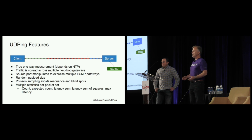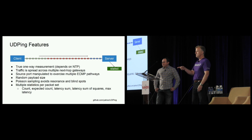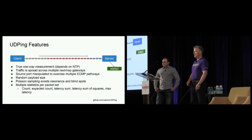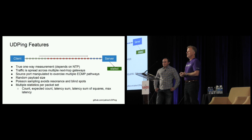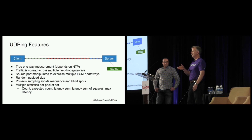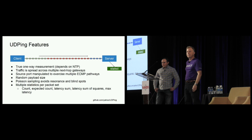We do true one-way measurement, so we can measure quality of service in one direction versus another. If we have a funny route in one direction that isn't the other way, we can actually isolate that problem. We also spread the traffic across multiple NextHop gateways by writing the Ethernet frame and manipulating the NextHop MAC, forcing traffic to go to either the primary or secondary router. We manipulate the source port so we can exercise multiple ECMP pathways. Since we're writing the link-level header, we can use as many source ports as we want without binding to a UDP port — we just throw packets on the wire. This makes it easy to deconflict multiple instances of UDPing running on a single client machine.